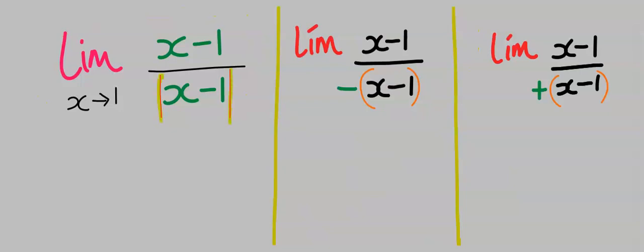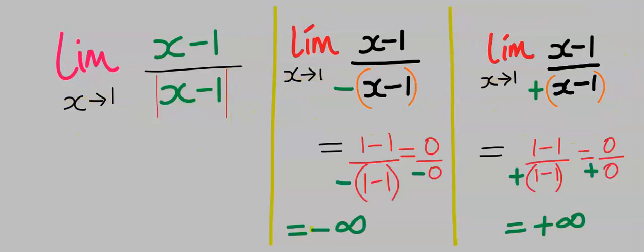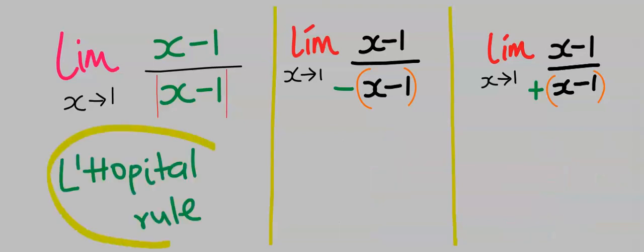Solving this, we are going to get negative infinity and positive infinity. Next, let's apply L'Hôpital's rule. Differentiate x and you're going to get one. Next, differentiate one and you're going to get zero. Next, differentiate x